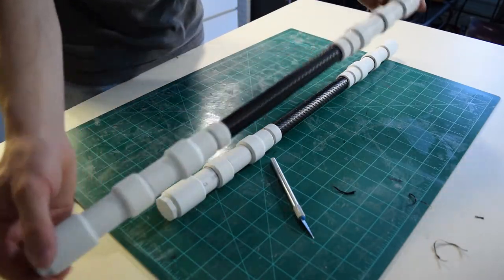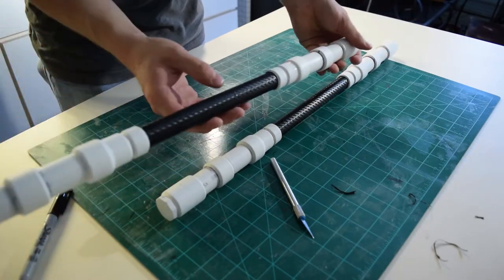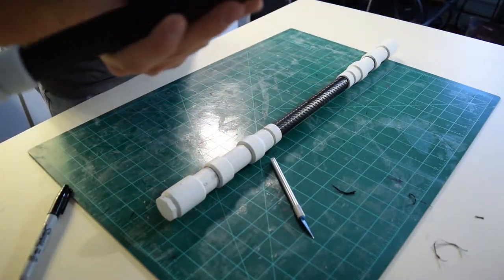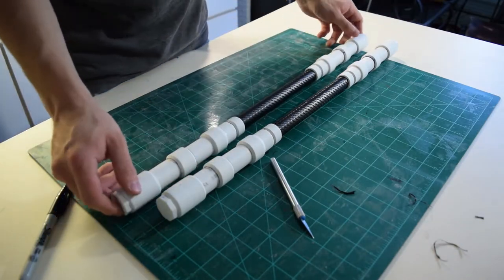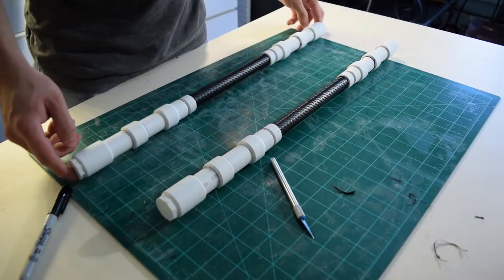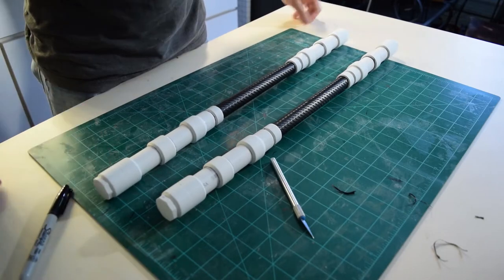Okay and there we go, all of the middle section is wrapped. There's a couple of little bubbles and stuff but that can all be taken care of later and I think now we are ready for priming.